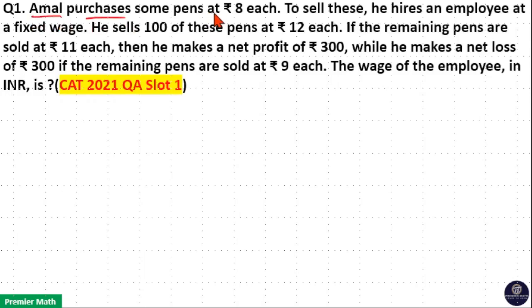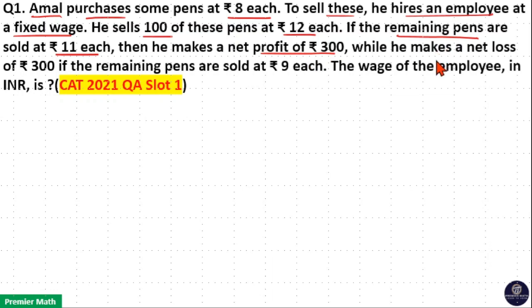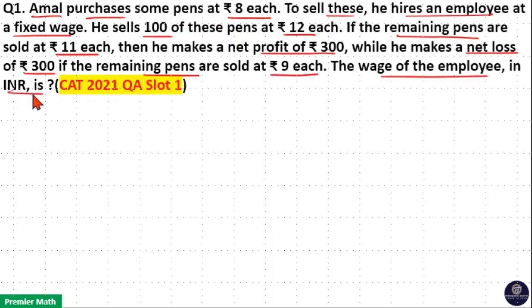Amal purchases some pens at Rs. 8 each. To sell this, he hires an employee at a fixed set wage. He sells 100 of these pens at Rs. 12 each. If the remaining pens are sold at Rs. 11 each, then he makes a net profit of Rs. 300. While he makes a net loss of Rs. 300, if the remaining pens are sold at Rs. 9 each. Find the wage of the employee in Rs.